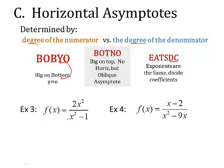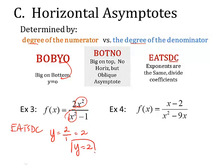Look at example three. If I'm just looking at horizontal asymptotes, I look at the power of x on the top versus the power of x on the bottom. You have x² in both places. So, the exponents are the same. So, this is EATSDC. And y will equal 2 divided by 1, the coefficients of x². And that's just a 2. So, y equals 2 is my horizontal asymptote.